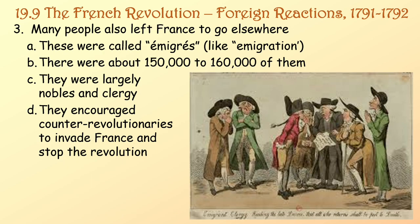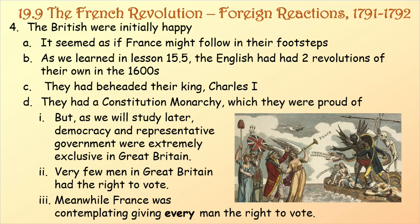Many people also left France to go elsewhere. These people were called émigrés — as in immigrant — and there were about 150,000 to 160,000 of them. They were largely nobles and clergy, and they encouraged counter-revolutionaries to invade France and stop the revolution. The British were initially happy; it seemed as if France might follow in their footsteps. As we learned previously, the English had had two revolutions of their own in the 1600s. They had beheaded their king Charles I back in 1649, and they had a constitutional monarchy and a Bill of Rights they were very proud of. But democracy and representative government were extremely exclusive in Great Britain.